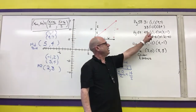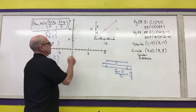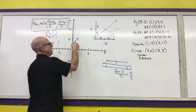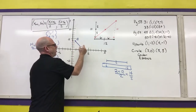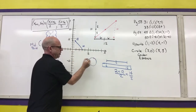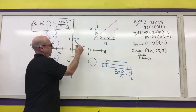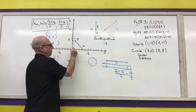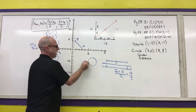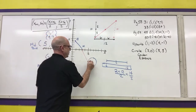The next two examples are cases where they give you an endpoint and a midpoint, and I need to find the other endpoint. If they tell me that the point (1, 4) is an endpoint and the point (3, 0) is a midpoint, I need to find the other endpoint. The thought process I use: to go from (1, 4) to (3, 0), I went down 4 and to the right 2. So to get to the other endpoint, I go down 4 more and right 2 more. And that other endpoint is at (5, -4).